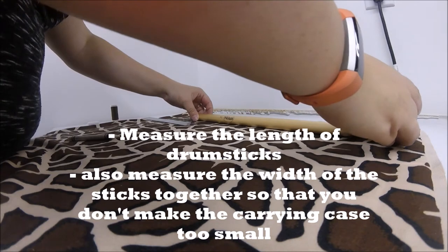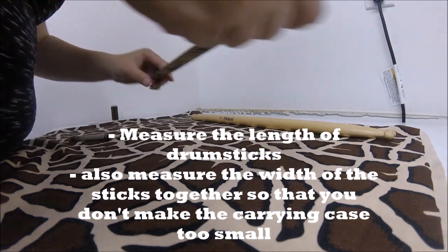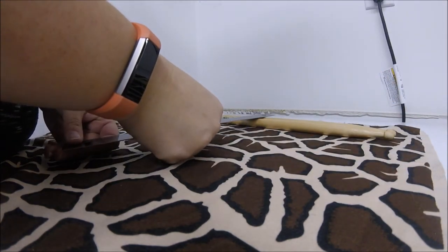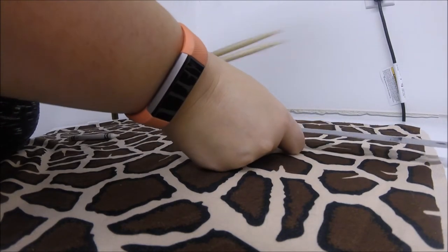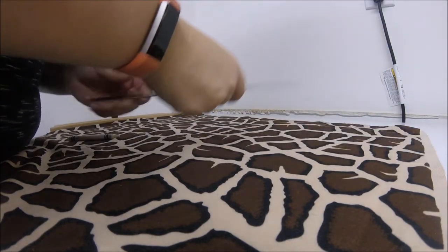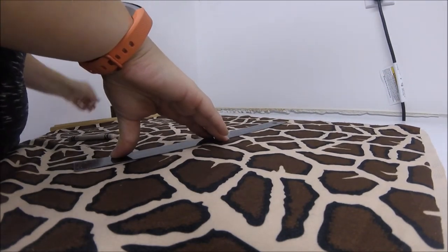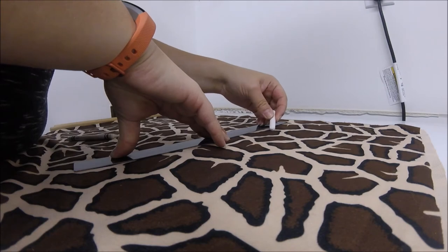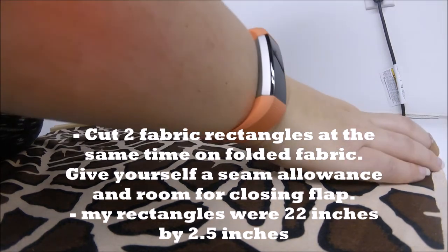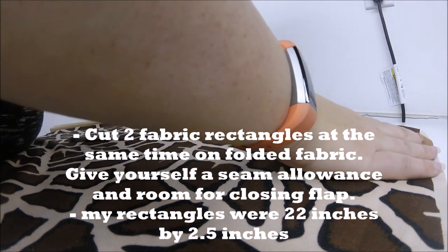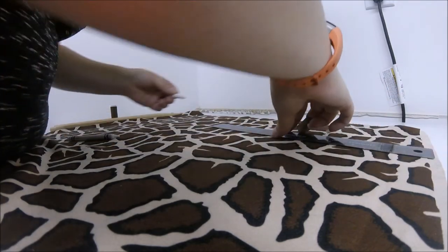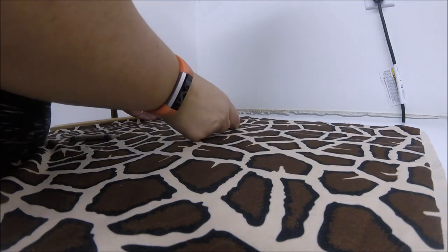They're only an inch across, so we're going to give it a seam allowance. We'll want to cut this. If they're one inch across, we're going to give it a good two and a half inches, just so we have some room. If Awesome Dude wants to put a pen or extra drumsticks or whatever in there, we're going to mark that up all the way across.